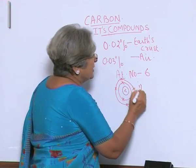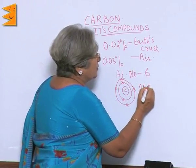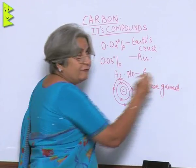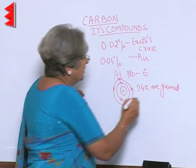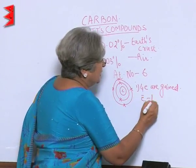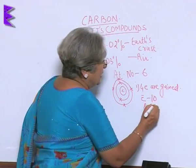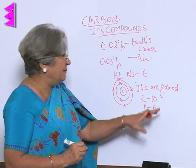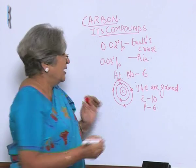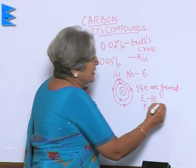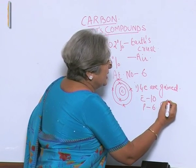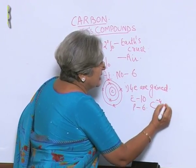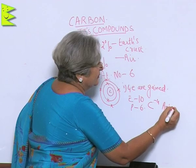The first way is that 4 electrons are gained. If 4 electrons are gained, then electrons will become 10 while protons will be 6. How will 6 positive charges manage 10 electrons? It cannot, and if it does, then carbon will become C⁴⁻, that is, an anion.